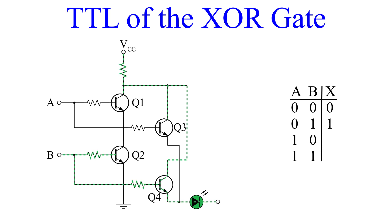We'll switch B off now and turn on A. Transistors Q1 and Q3 have a base bias, and both also have a voltage at their collectors. However, Q1's emitter runs to Q2's collector and Q2 is off, so no current through there. Instead, current flows through Q3, which is turned on, and through our LED, lighting it up. So for inputs A equals 1 and B equals 0, the output is 1.